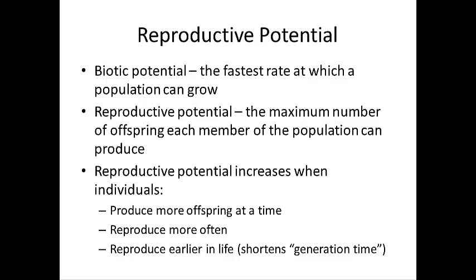How much the population grows is also based on the reproductive potential of the species. Every species has a certain biotic potential, which is the fastest rate at which that population can grow. The maximum number of offspring each member can produce is the reproductive potential. This increases when a species produces more than one offspring at a time, reproduces more often, or reproduces earlier in life — which shortens the generation time and increases reproductive potential.